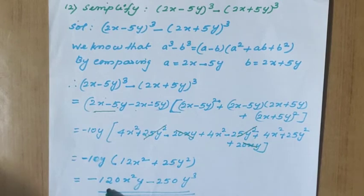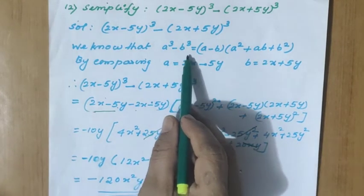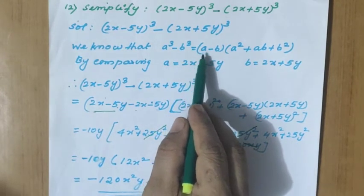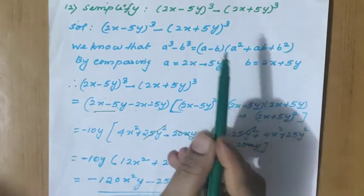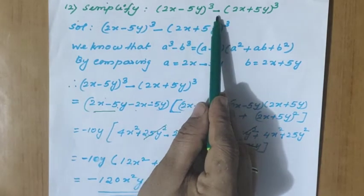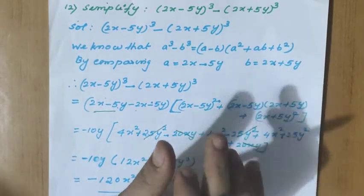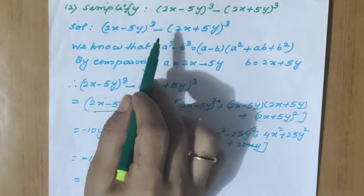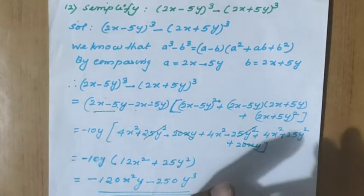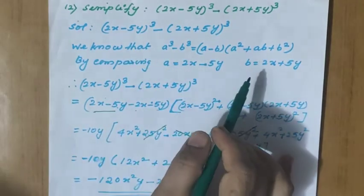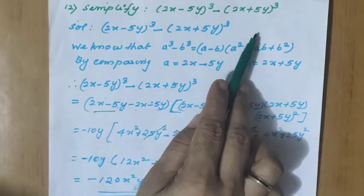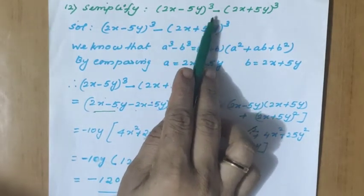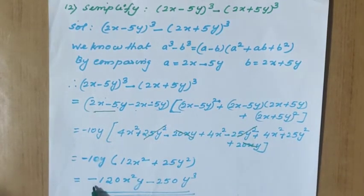So the remaining terms in the bracket are 12x square plus 25y square. Multiply with minus 10y: we get minus 120x square y minus 250y cube. So which formula did we apply? a cube minus b cube, where a cube minus b cube equals a minus b into a square plus ab plus b square. Anyone can also try a minus b whole cube and a plus b whole cube approach — you will get the same answer: minus 120x square y minus 250y cube.